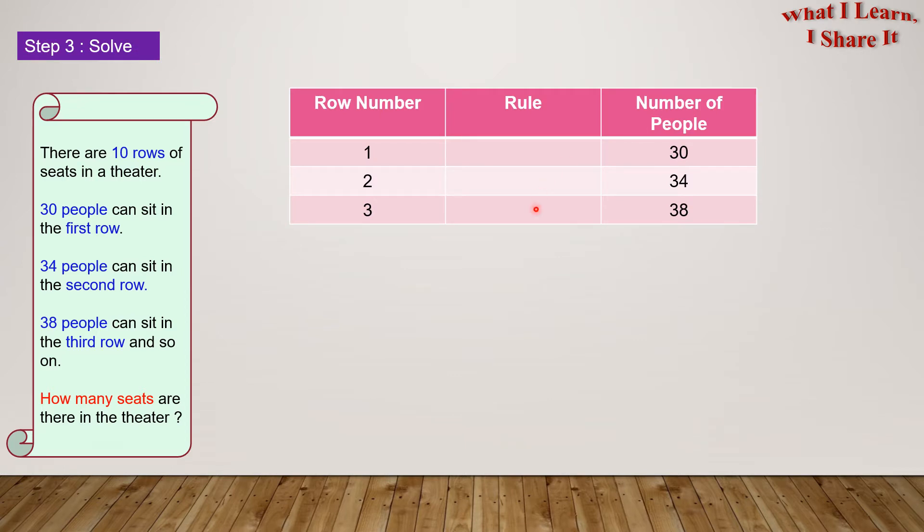Let's start by making a table. Here we have the row number, here we have the rule, and we have the number of people over here. If we observe carefully, we'll find out that with each new row, the number of people are increasing by 4. So, the rule is plus 4.